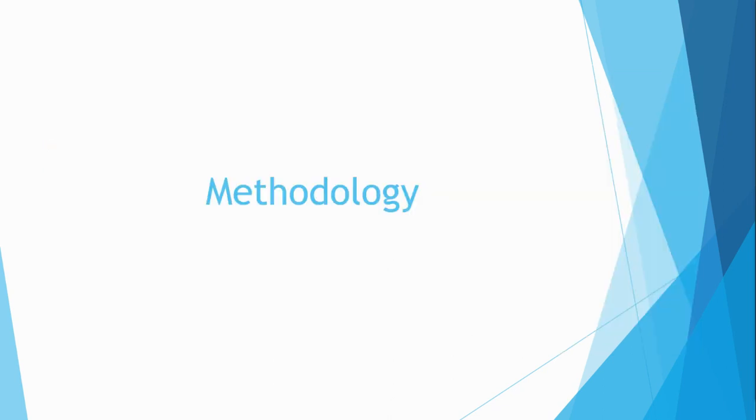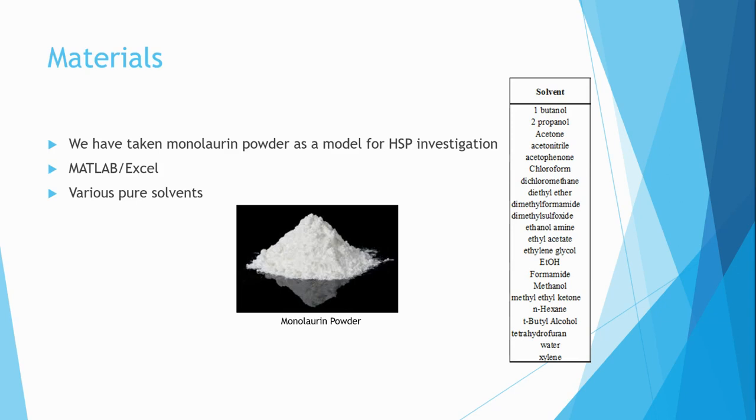Now I'm going to talk about the methodology of the system and how we can actually determine the HSP sphere of a species through experimental observation. For the materials of this lab, we have taken monolaurin powder as a model chemical for HSP investigation.